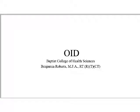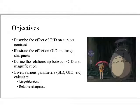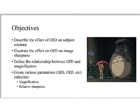We're going to talk about object-to-image receptor distance, or OID. Here are the learning objectives. We want to describe the effects of OID on subject contrast. OID is one of those things you kind of forget about, but it has a little piece of everything. It's going to affect things like contrast, magnification, and sharpness — both geometrical qualities of the image as well as some of the technique qualities of the image.